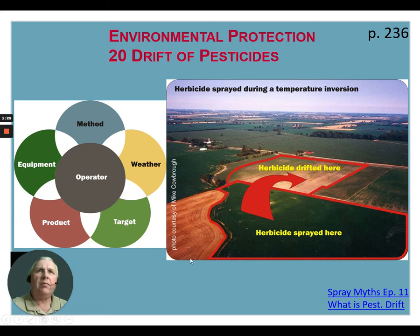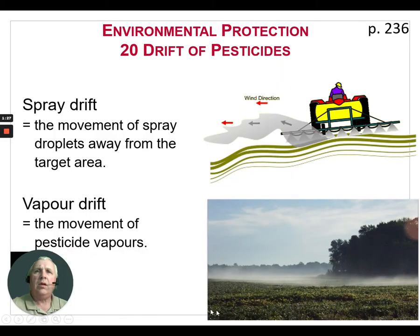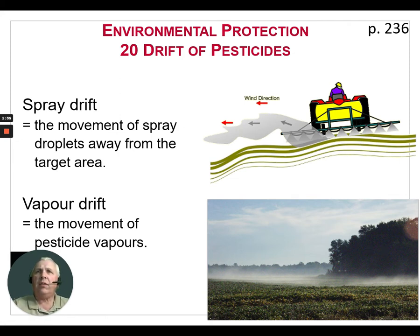There are two types of drift to consider. Spray drift is the movement of spray droplets away from the target area, and it happens at the time of application. Vapor drift, however, is the movement of pesticide vapors and can happen two or three days after the application, depending on the product.